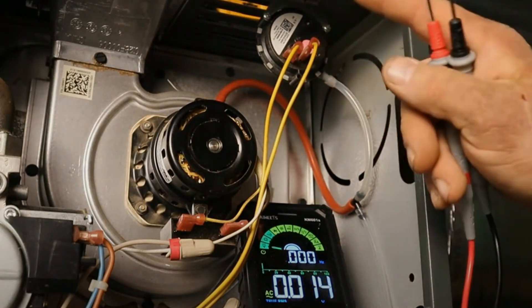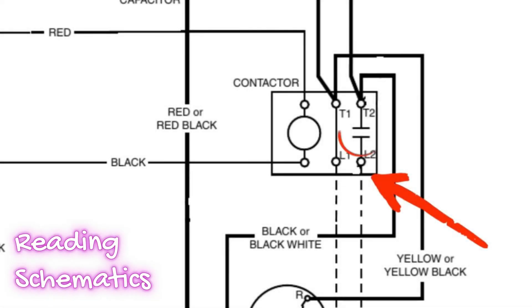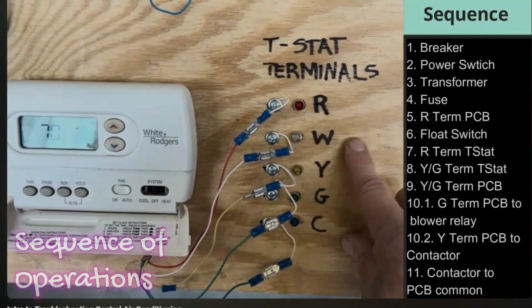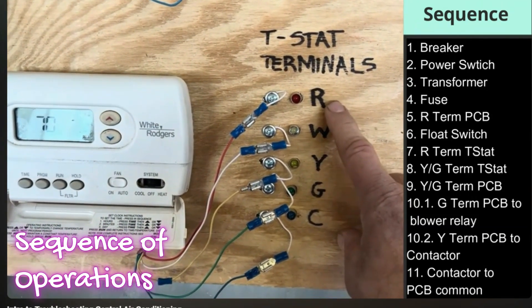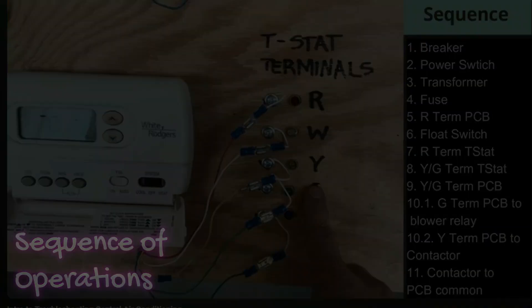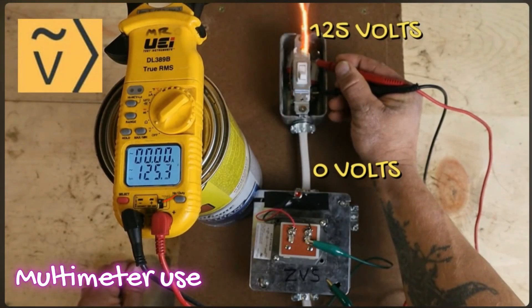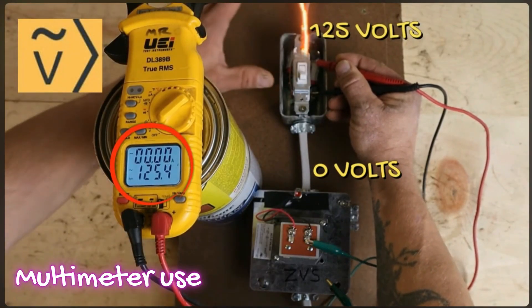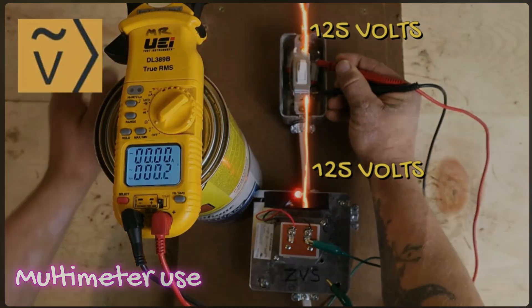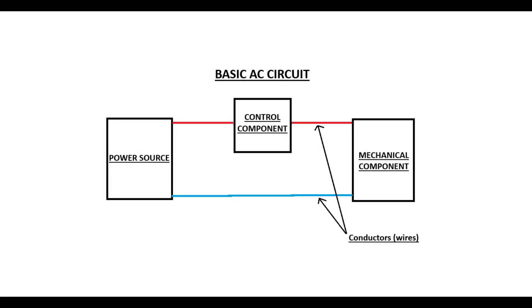Eventually what I learned is that there are three main components in learning how to diagnose systems. You have to learn how to read schematics, learn the sequence of operation — in what order components turn on and off — and learn how to use a multimeter and its different functions. But before all that, I really needed to learn how a circuit is structured and how they actually work, because without learning that first, the other things were not possible.